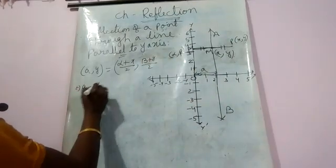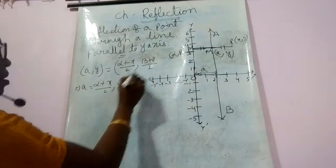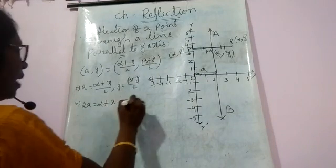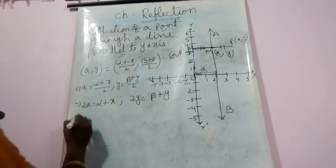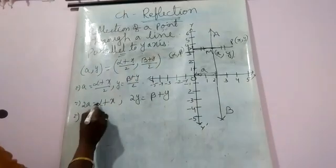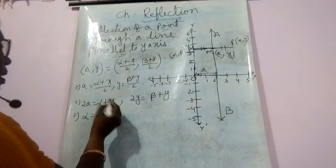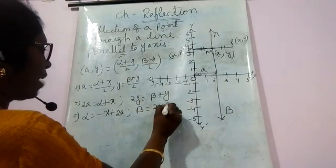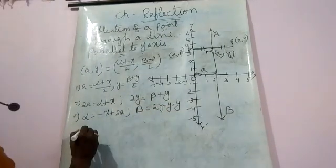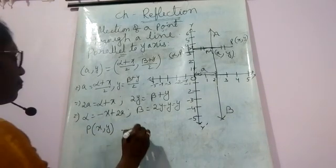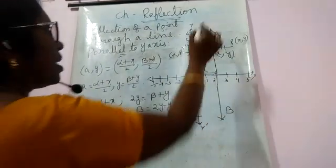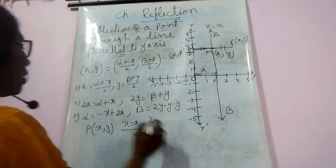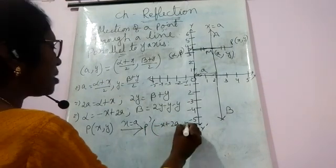From the midpoint equations: 2a = alpha + x, so alpha = -x + 2a. And 2y = beta + y, so beta = y. Therefore, the coordinates of P' when point P(x,y) reflects through a line parallel to the y-axis with equation x = a are: alpha = -x + 2a and beta = y.